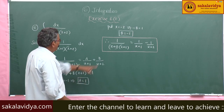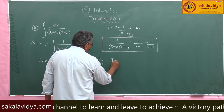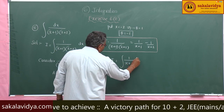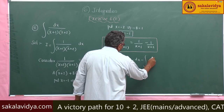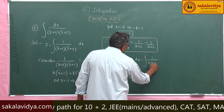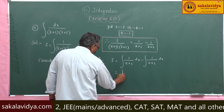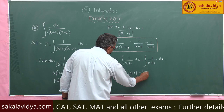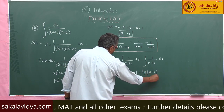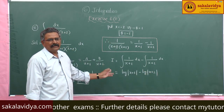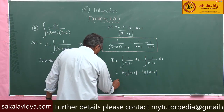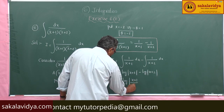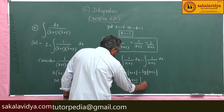Now integrate: I equals integral of 1 by (x+1) dx minus integral of 1 by (x+2) dx. This gives log|x+1| minus log|x+2|. Using the logarithmic formula log a minus log b equals log(a/b), this simplifies to log|x+1| by |x+2| plus constant of integration.